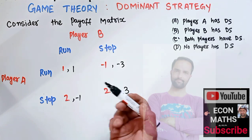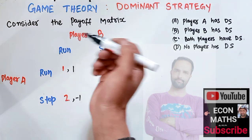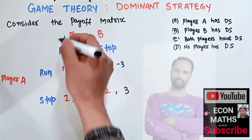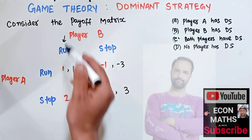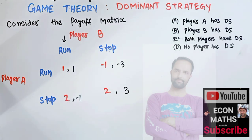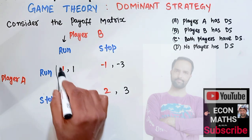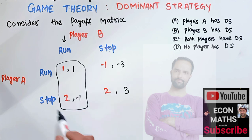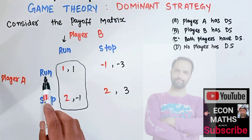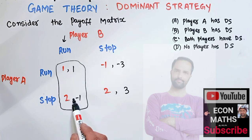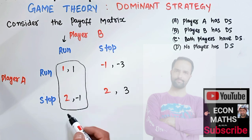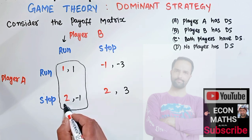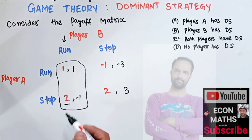Let us see whether player A has a dominant strategy. Suppose player B chooses to run — we are looking at this column. When player B chooses to run, player A has two options: run gives him a payoff of 1, stop gives him a payoff of 2. Obviously player A will choose to stop because it gives him more payoff than run.